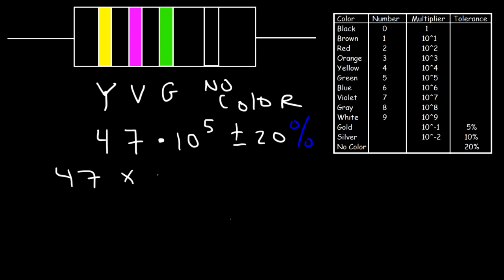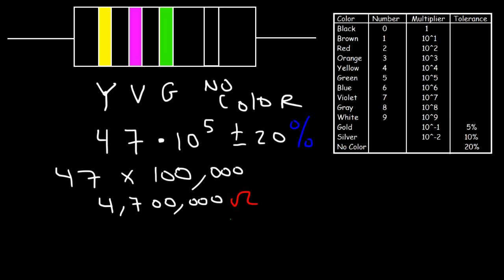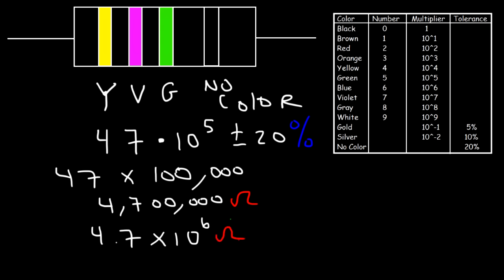What's forty-seven times ten to the five? Ten to the five is basically a hundred thousand — it's a one with five zeros. If you multiply forty-seven by a hundred thousand, that's going to be four point seven million, or four million and seven hundred thousand ohms. In scientific notation, moving the decimal six units to the left, this is equivalent to four point seven times ten to the six ohms. Ten to the six represents mega, so you can write it as four point seven mega ohms. Anytime a value is above a million, you want to use mega ohms.